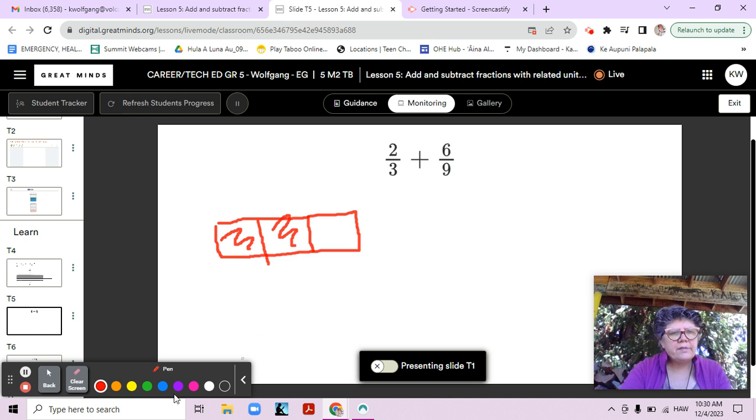Now six-ninths, let's do that in a different color. Still going to be one whole, right? These are both representing one whole. Now if I wanted to make six-ninths, I know that three times three equals nine. So I could make three parts and break them all into three parts. Let's make these parts a little bit darker so we can see where our line is. There we go.